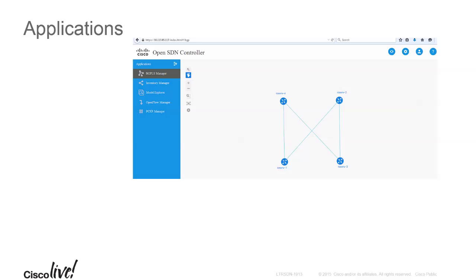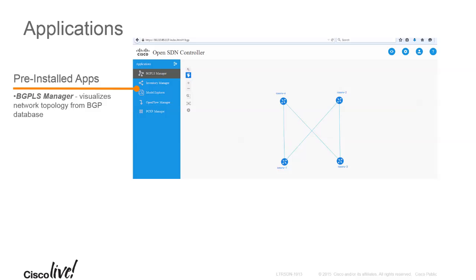The GUI interface, the LUX interface, has an application toolbar on the left-hand side with various pre-installed apps, and the labs will go through each one in detail. In this overview, I'll focus more on the protocols that the applications use. There's the BGP-LS Manager, which helps you visualize a network topology from the BGP database. The Inventory Manager lets you look at devices connected to the SDN Controller and drill down on interfaces to see statistics.